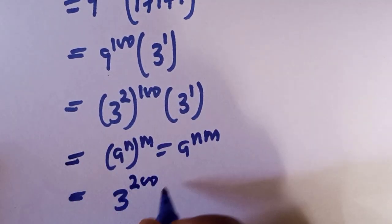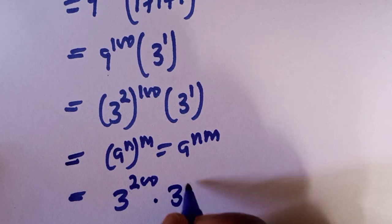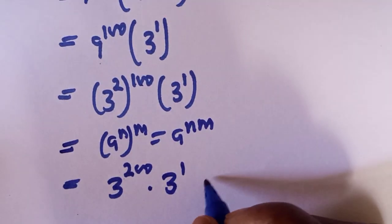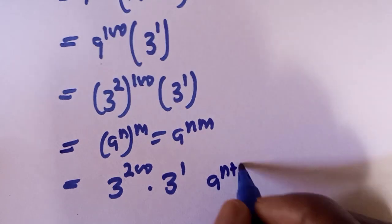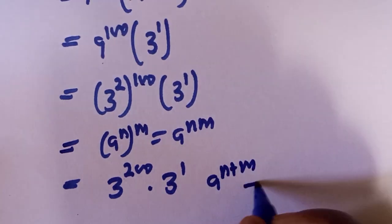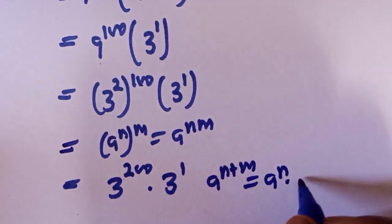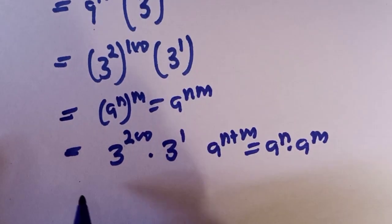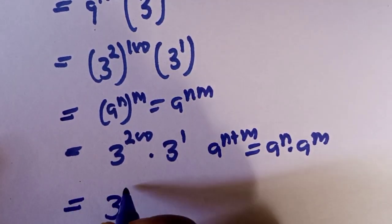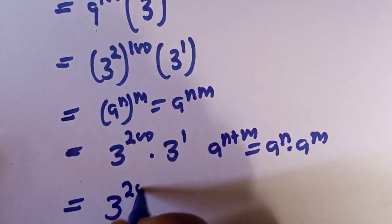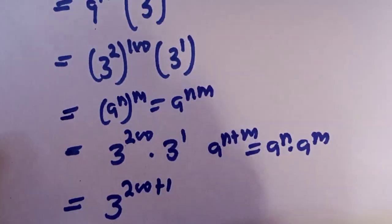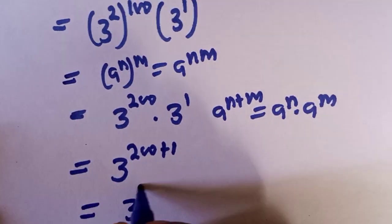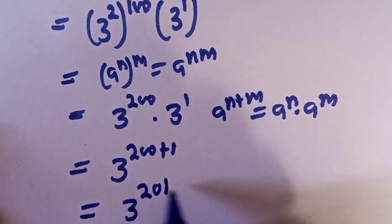Remember that if you have a raised to the power of n plus m, this equals a raised to power n multiplied by a raised to power m. So we have 3 raised to the power of 200 plus 1, which equals 3 raised to the power of 201.